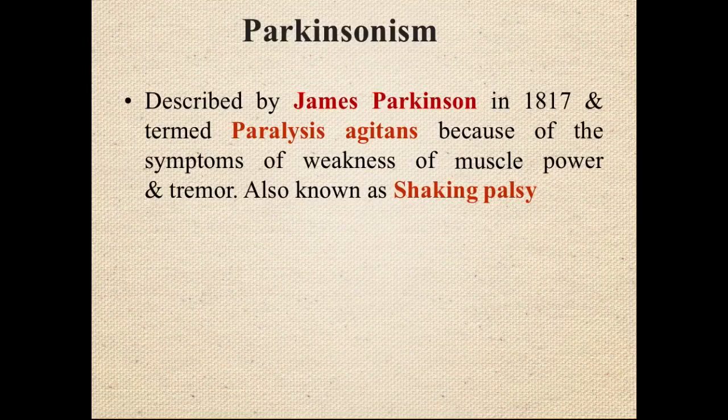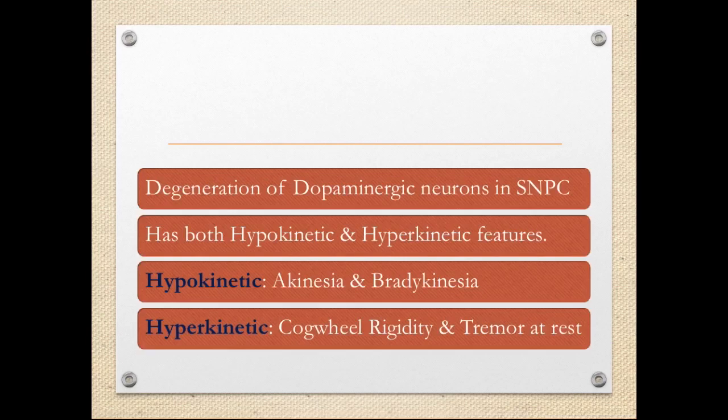The major disease associated with the basal ganglia is Parkinson's disease, or parkinsonism, first described by James Parkinson and named after him. It is also known as paralysis agitans — meaning weakness with tremor — or shaking palsy. Parkinson's disease, parkinsonism, paralysis agitans, and shaking palsy all refer to the same condition.